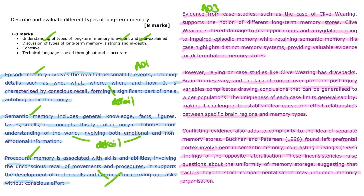Each of the evaluative paragraphs starts with a clear point, introducing the main idea — the main strength or limitation. For example, in the first paragraph, the point is about the strength of the evidence from case studies, and particularly the Clive Wearing case. This establishes a key point for the evaluation and then goes on to explore and explain it further.